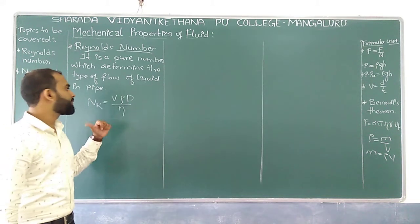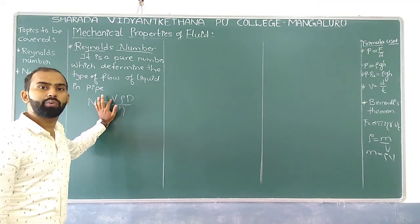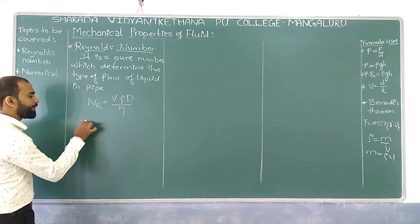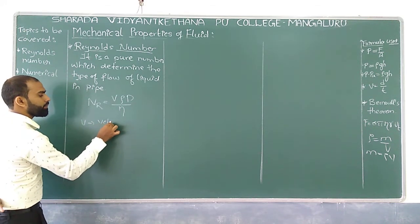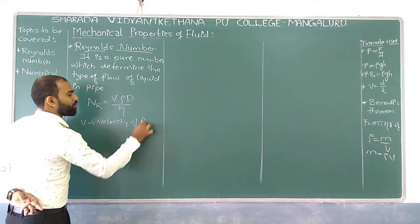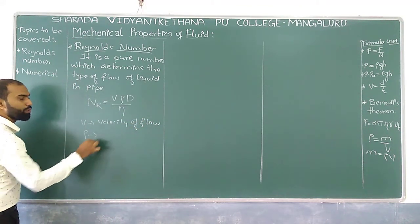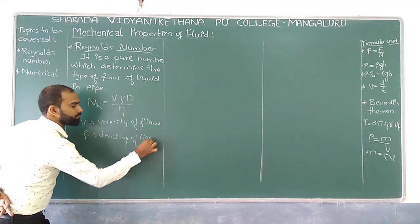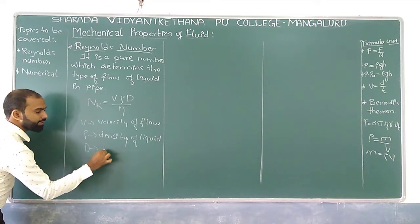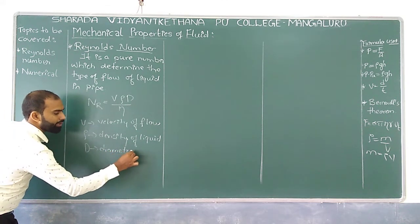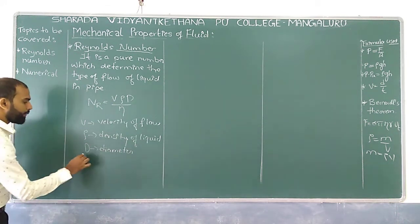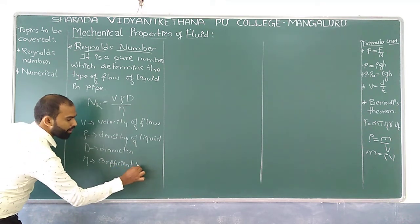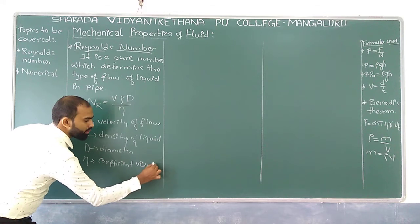Here, eta represents the viscosity of the liquid, v is the velocity of the liquid flowing in a particular tube, rho indicates the density of the liquid, capital D indicates the diameter of the particular tube, and eta represents the coefficient of viscosity.